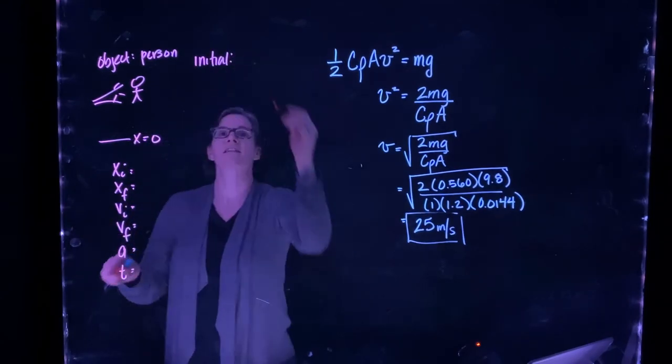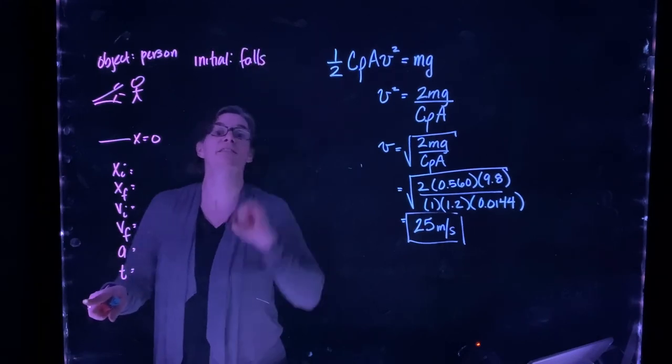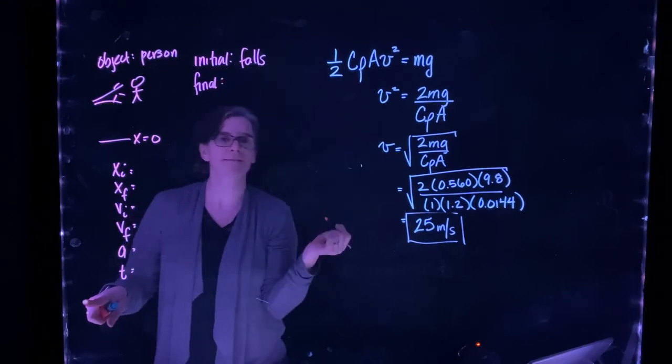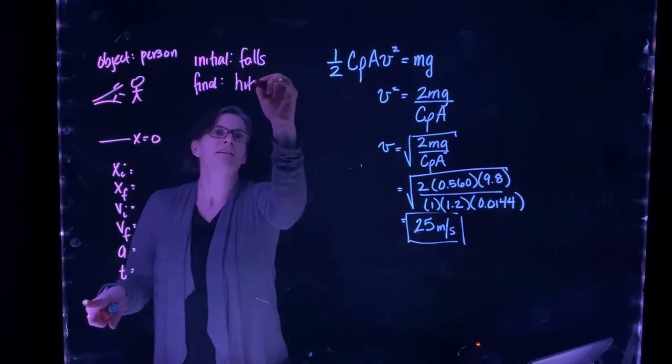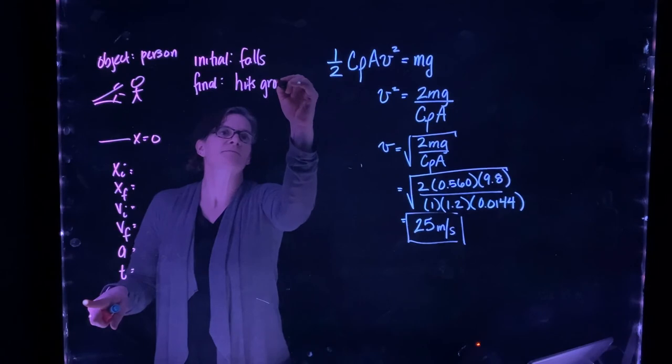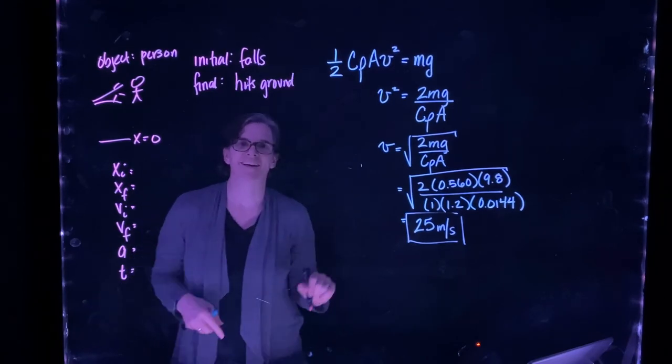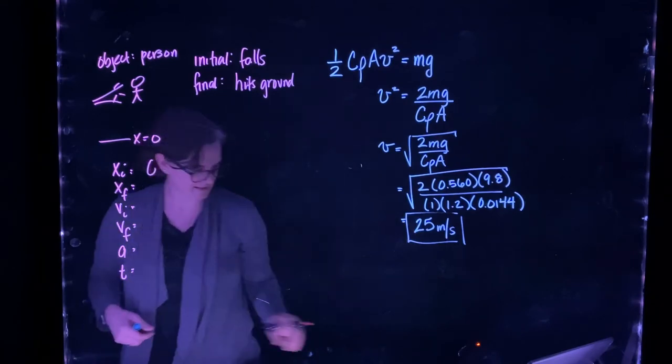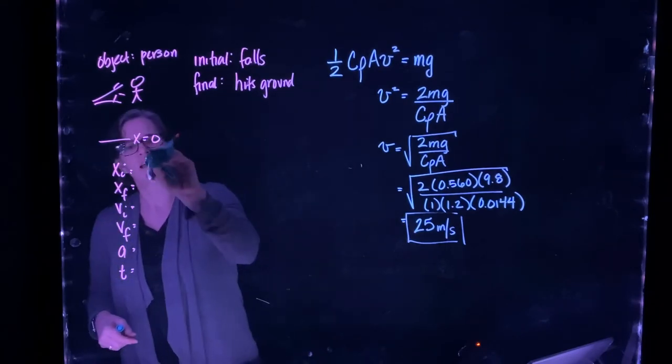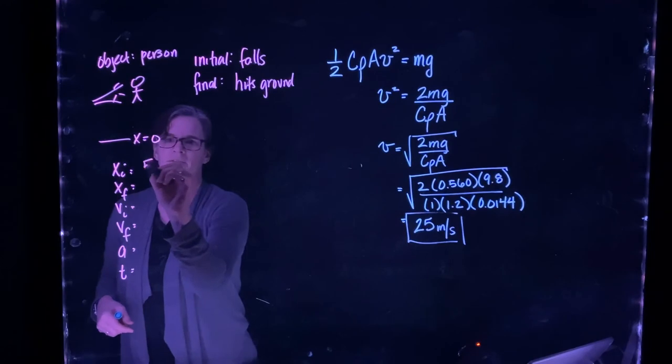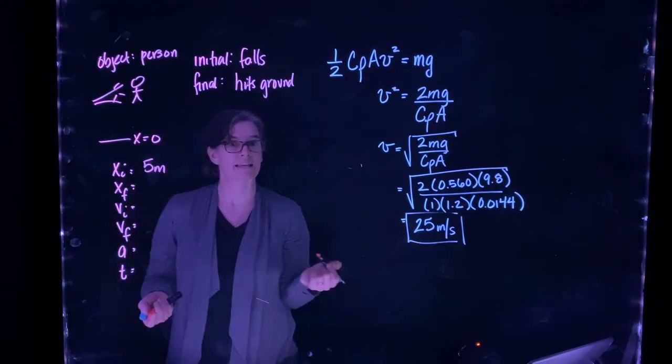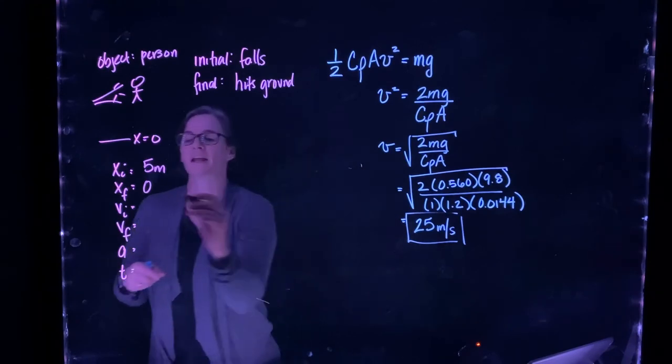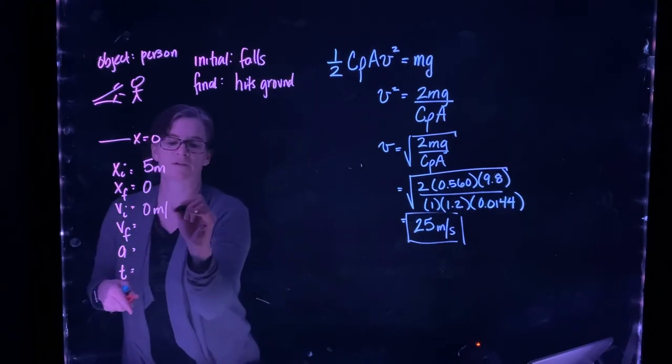So what corresponds to our initial condition? That's when he falls, leaves the branch. And what corresponds to our final position? That's when he hits the ground. He starts where he falls, at the branch, at five meters. He ends at the ground.